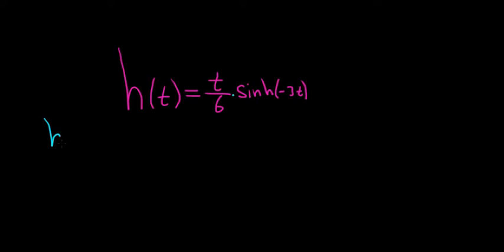However, before we find the derivative, it could be beneficial to write this as follows. So the t over 6, we can write that as 1/6 t. It just makes it easier to think about. That way, when we take the derivative here, we'll just get 1/6. So times, then we have the hyperbolic sine of negative 3t.